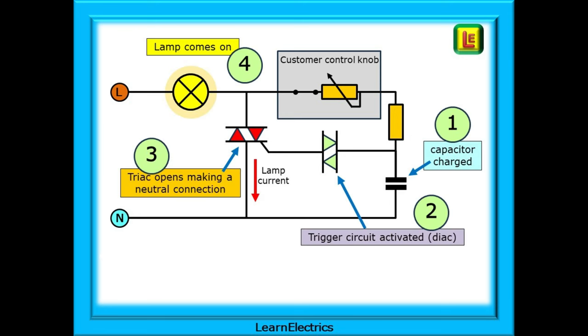This is the sequence of operation. Beginning at number one, the capacitor begins to charge up at a rate set by the customer control. At number two, the capacitor reaches a preset charge level and activates the trigger circuit. This is a type of semiconductor device called a DIAC. The DIAC allows current through and this is directed onto the trigger for the TRIAC device. At position three, the TRIAC, a type of semiconductor switch, is triggered and allows current to flow through itself and the lamp with sufficient current to illuminate the lamp at number four.